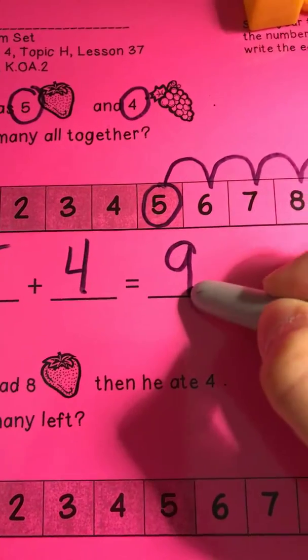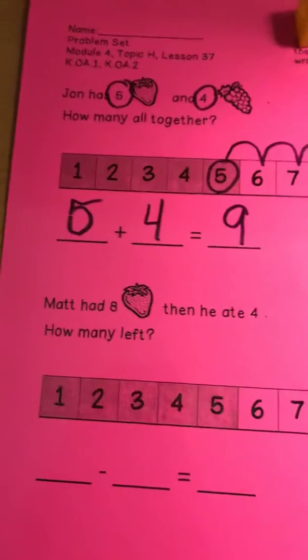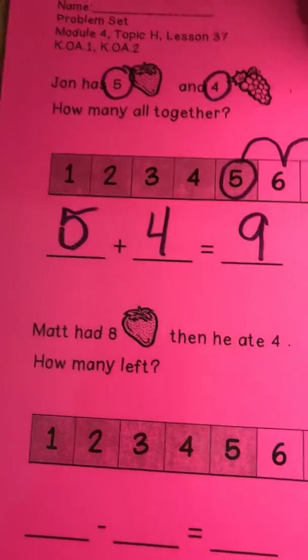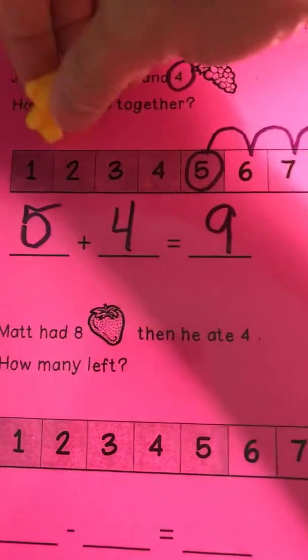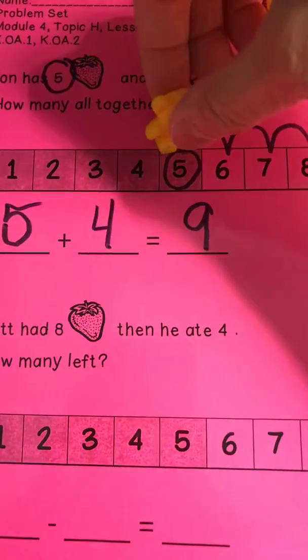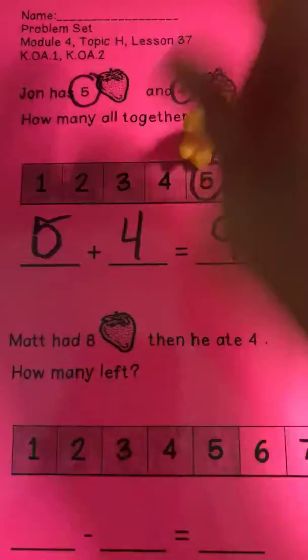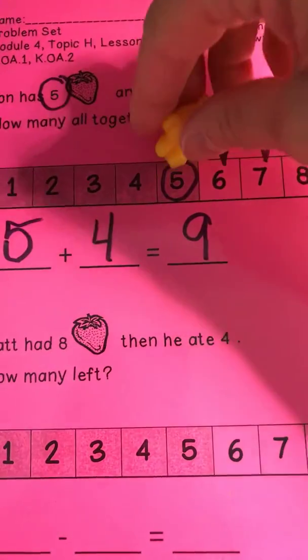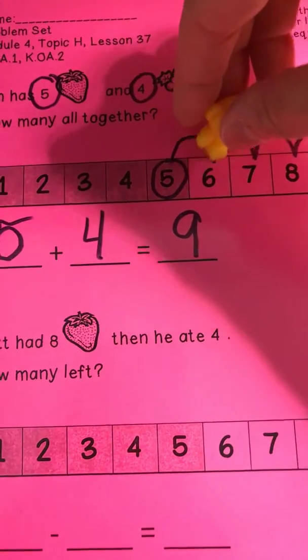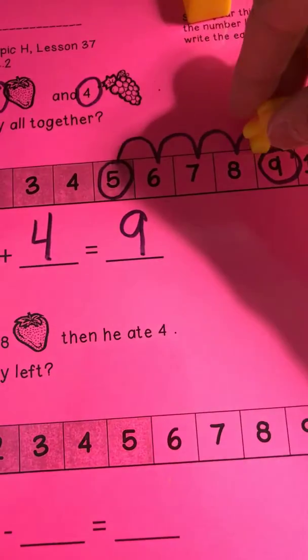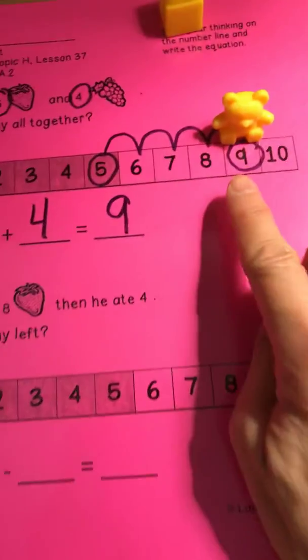Now if I wanted to use my bear I could. I would start on the number five and I would jump four more: one, two, three, four. And I would also end on the nine.